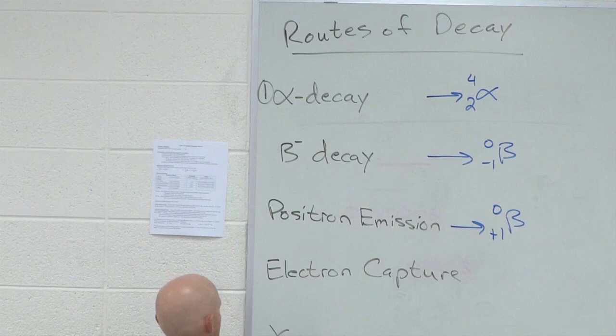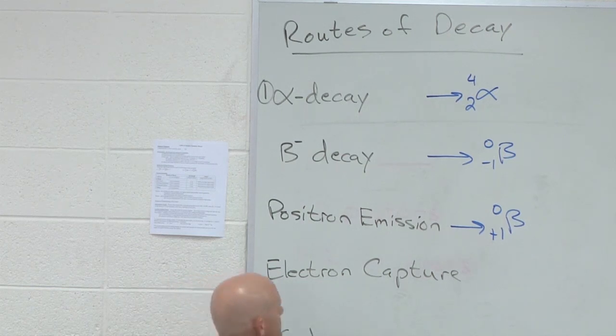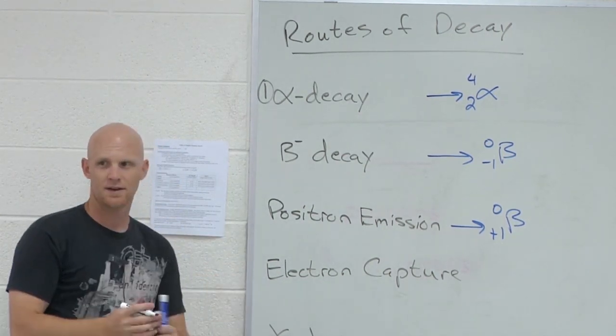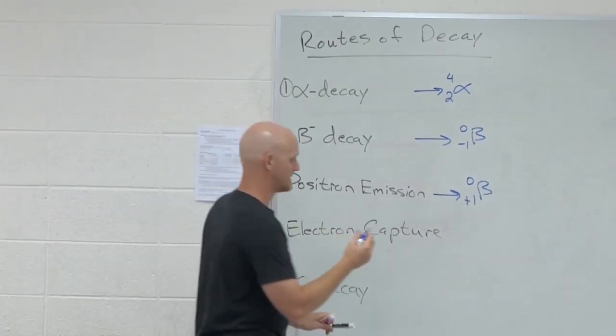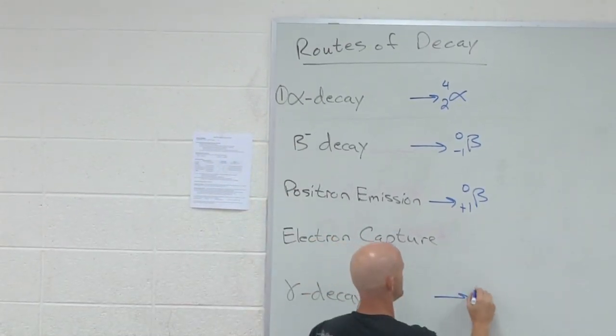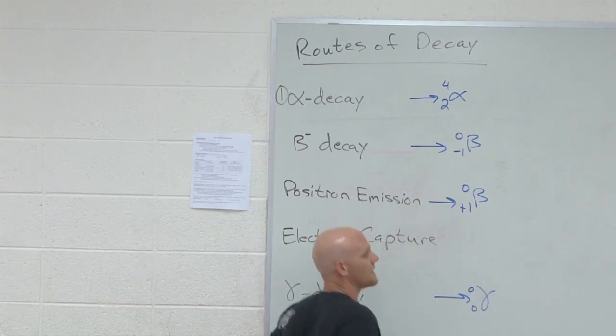Gamma decay is also called gamma emission. And being emission again, guess where you're going to find the gamma particle or the gamma ray, I should say. Product side. This one is going to have a gamma on the product side.